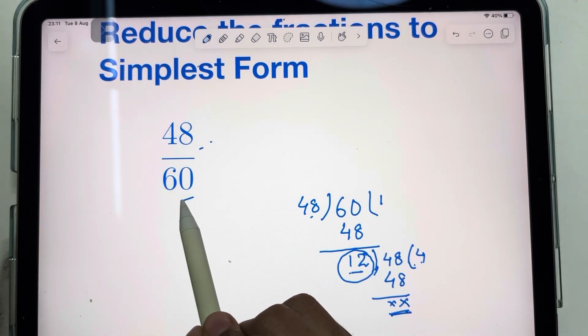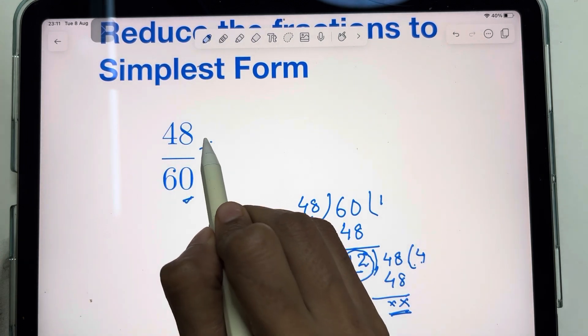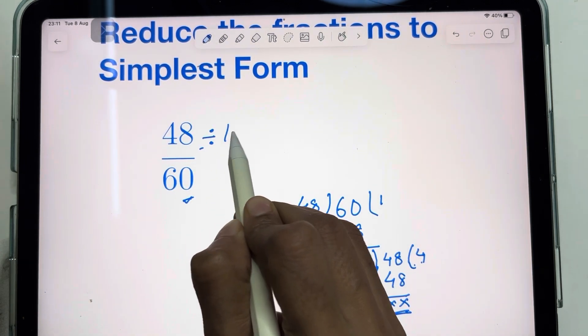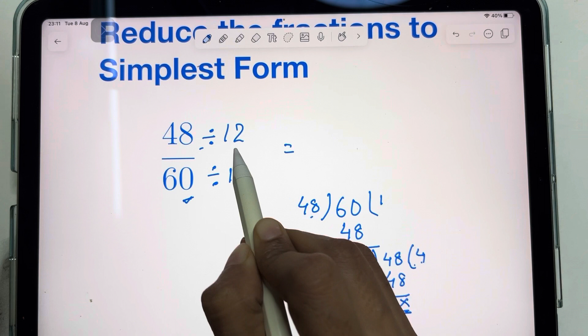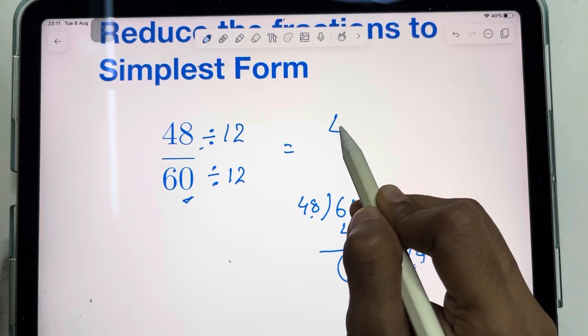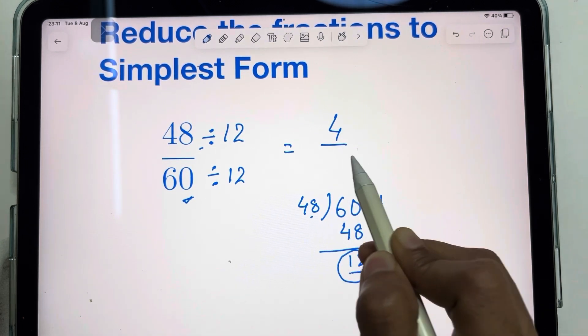To reduce this fraction into simplest form, divide both the numerator and denominator by 12, which gives us 12 times 4 is 48 and 12 times 5 is 60.